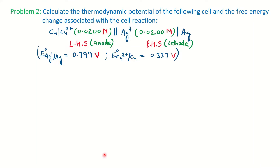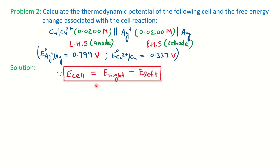Now we will see a different category of problem from redox reaction — calculating thermodynamic potential and free energy for a given cell reaction. This type of problem commonly appears in competitive exams such as GATE and CSIR NET. A cell is given; the left-hand side electrode is the anode (oxidation occurs) and the right-hand side electrode is the cathode (reduction occurs). The standard potentials are given for both.